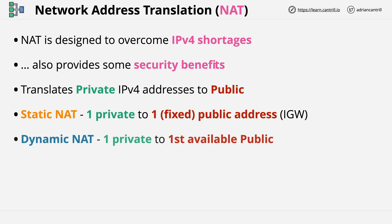Dynamic NAT is similar, but there isn't a static allocation. Instead, you have a pool of public IP addresses to use, and these are allocated as needed when private IP addresses attempt to use the internet. This method is generally used when you have a large number of private IP addresses and want them all to have internet access via public IPs, but when you have fewer public IP addresses than private IP addresses and want to be efficient with how they're used.